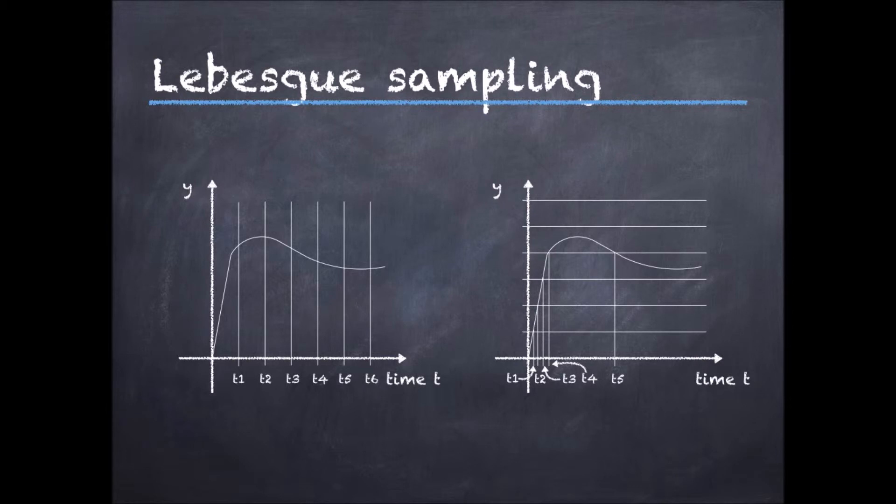If we want to write down mathematically the times tk at which the loop is closed, for periodic control, this is simply tk equals k times h, where h is the sampling period. For event-triggered control, these times are given by the times at which the absolute value of the difference between the last output value and the current one, at times tk plus 1, exceeds a certain threshold, say d.